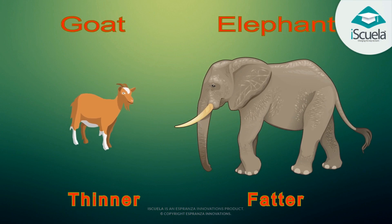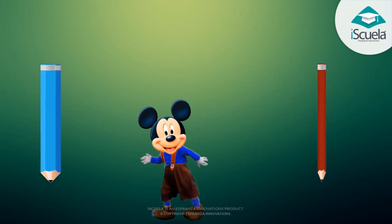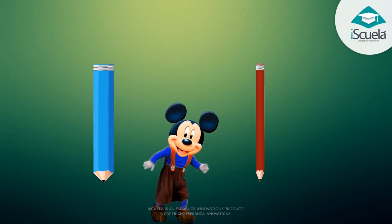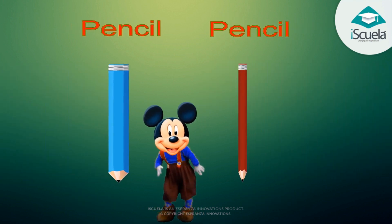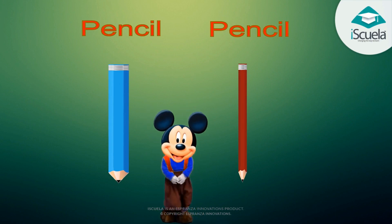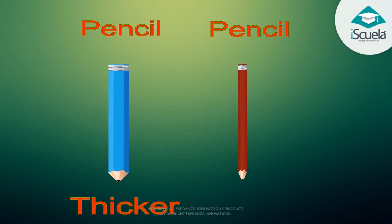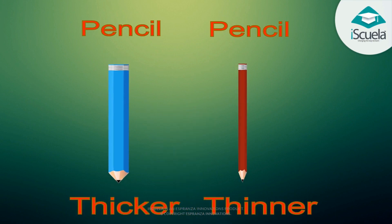Who is thicker? Who is thinner? Look and tell. Blue pencil is thicker. Red pencil is thinner.